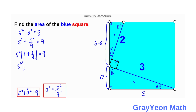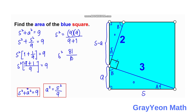We get the LCD, which is 9, so we have S squared times (9 over 9 plus 1 over 9) equals 9, which simplifies to S squared times (10 over 9) equals 9. Cross-multiplying gives S squared equals 9 times 9 over 10, so S squared equals 81 over 10. Since the area equals S squared, the area is 81 over 10 square units, and that is our answer.